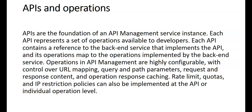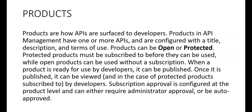Products are how APIs are surfaced to developers. Products in API Management have one or more APIs and are configured with a title, description, and terms of use. Products can be open or protected — protected products must be subscribed to before they can be used, while open products can be used without a subscription. When a product is ready for use, it can be published, at which point it can be viewed and, for protected products, subscribed to by developers. Subscription approval can require administrator approval or be auto-approved.